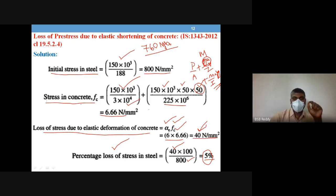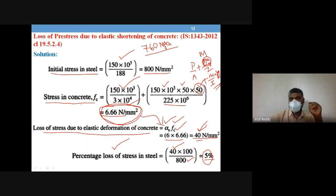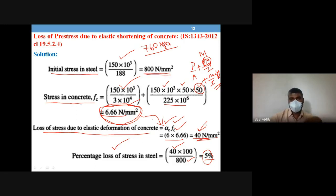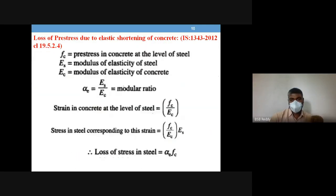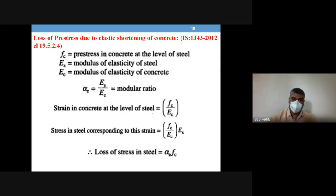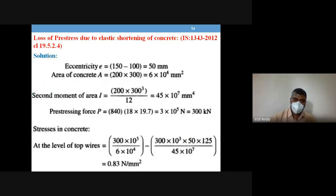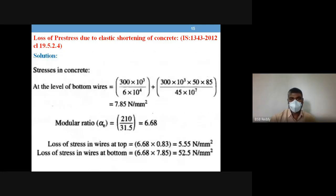This calculation is very simple: get the stress at the level of steel in concrete, multiply by the modular ratio — that gives the loss. For percentage, divide by the initial pre-stress and multiply by 100. This concludes the topic of loss of pre-stress due to elastic shortening of concrete. More examples will be discussed in further sessions.